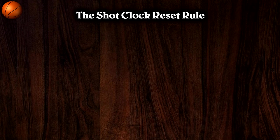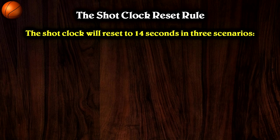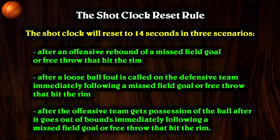The first rule we're gonna talk about is the new shot clock reset rule. The official rule now says that the shot clock will reset to 14 seconds in three scenarios: after an offensive rebound of a missed field goal or free throw that hit the rim, after a loose ball foul is called on the defensive team immediately following a missed field goal or free throw that hit the rim, or after the offensive team gets possession of the ball after it goes out of bounds immediately following a missed field goal or free throw at the rim.